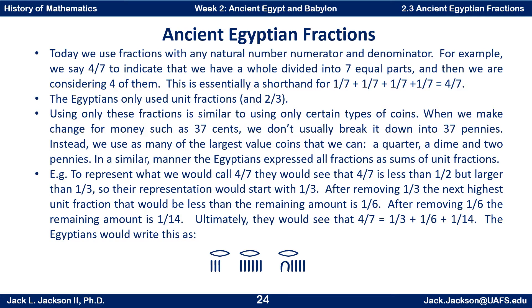Using only these fractions is similar to only using certain types of coins. When we make change for 37 cents, we don't usually break it down into 37 pennies. Instead, we use as many of the largest value coins as we can — probably a quarter, a dime, and two pennies. In a similar manner, the Egyptians expressed all fractions as sums of unit fractions.